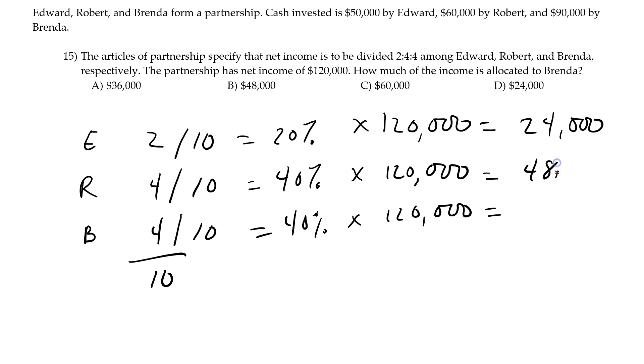So that's twenty four, that's forty eight, that's forty eight, that all equals—you know you might want to double check your math but in total you add those up it should equal the total amount of net income. So how much does Brenda get?